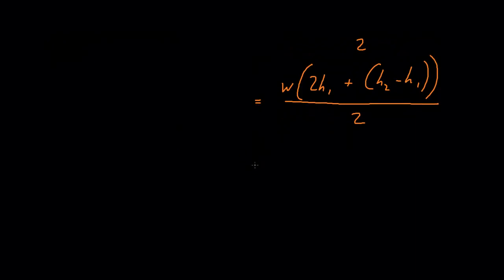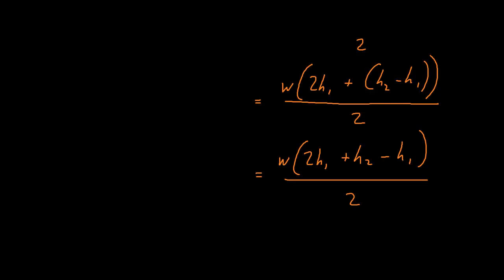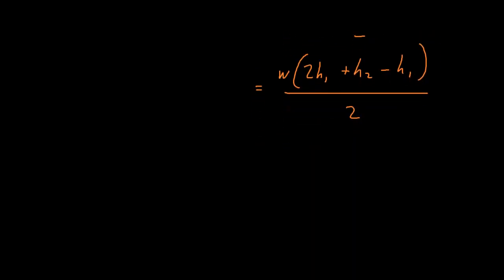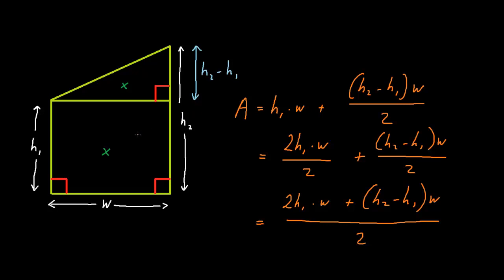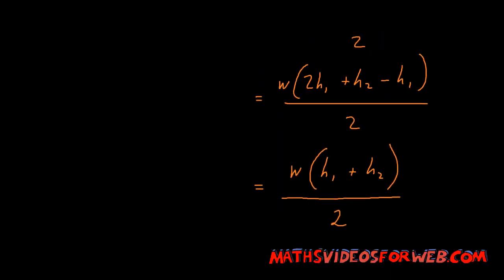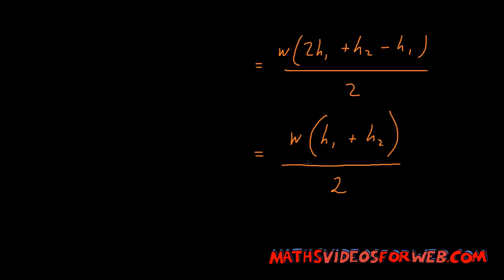If we simplify this further, we get w multiplied by 2h1 plus h2 minus h1 over 2, which leaves us with the formula w multiplied by h1 plus h2 over 2. And providing you use a picture similar to this one up here, you can use this formula to find the areas of trapeziums.